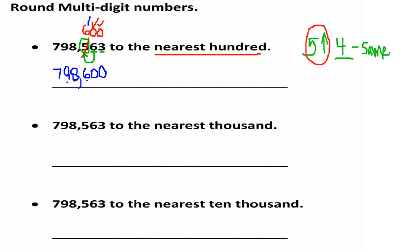Now let's look at the second problem. We're going to round the same number to the nearest thousand. Let's identify the digit in the thousands place — we have ones, tens, hundreds, thousands — so I'm going to circle that digit. We look at the digit in the smaller value right next to it, which is in the hundreds place, and it's a 5.